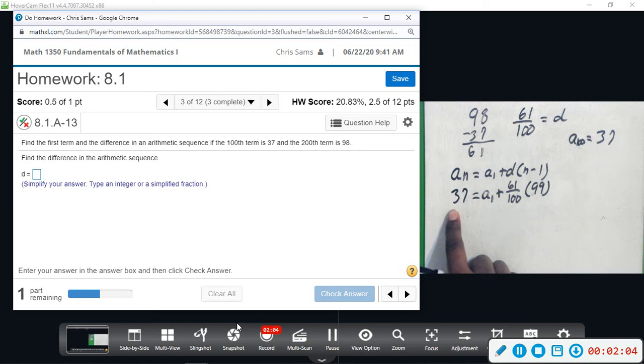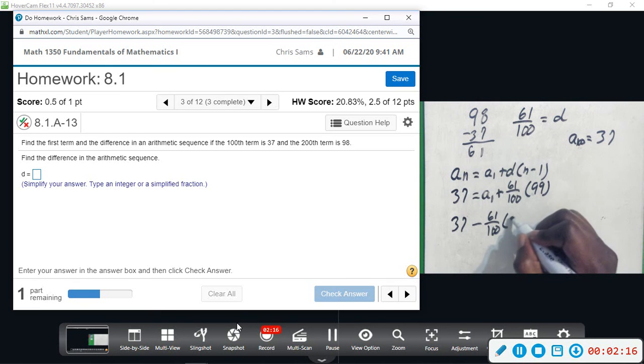I'm just going to type it in the calculator. I'm going to do 37, and we're going to subtract all of this: 61 over 100 times 99. All of this is actually one term when we multiply.